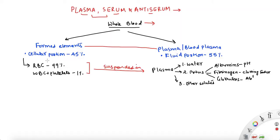The cellular portion makes up 45% of whole blood — the formed elements make 45% and the rest 55% is the fluid portion, which is plasma. Now what does the cellular portion contain? It contains RBCs, WBCs, and platelets. In that 45%, 99% is RBC and the remaining 1% is WBC and platelets.